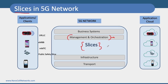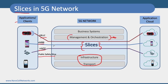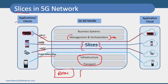Slices are basically logical parts of a single physical network. The services are decoupled from the underlying infrastructure, but to do this we need a very efficient management and orchestration layer. We have application slices for URLLC, eMBB, mMTC, and public safety. Each slice is a separate dedicated network, completely isolated from each other, running end-to-end from the radio network through the transport network to the core network.